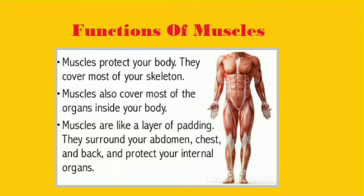Functions of muscles. Muscles in our body always work in groups. When some muscles contract, other muscles of the same group relax. This is how muscles help in the proper performance of various functions of our body. The muscle on the front of the bone in our upper arm is called the biceps. The muscle at the back is called the triceps. Muscles protect your body — they cover most of your skeleton and most of the organs inside your body.